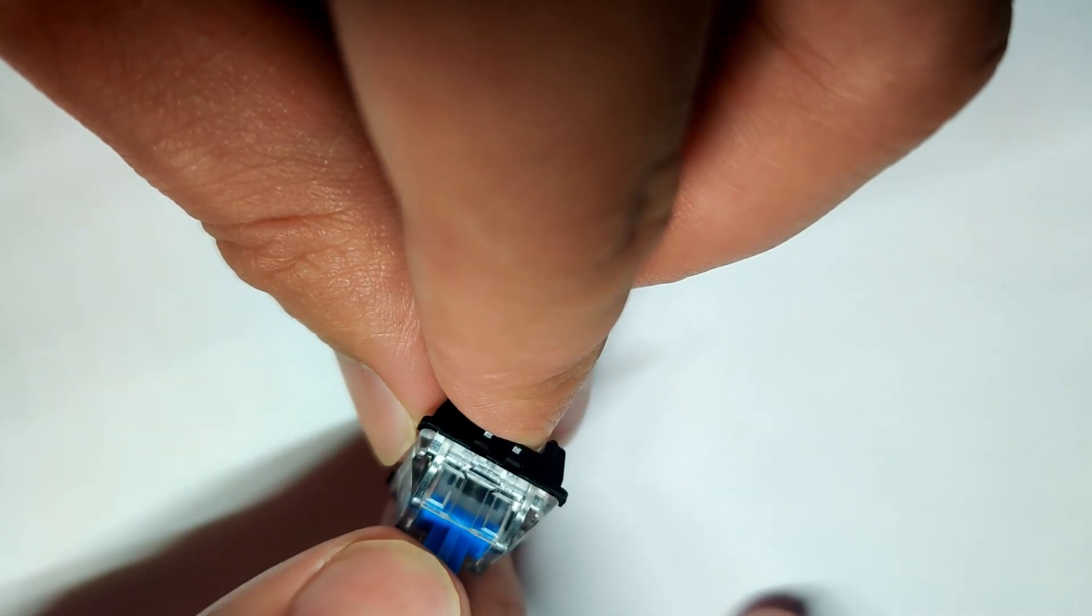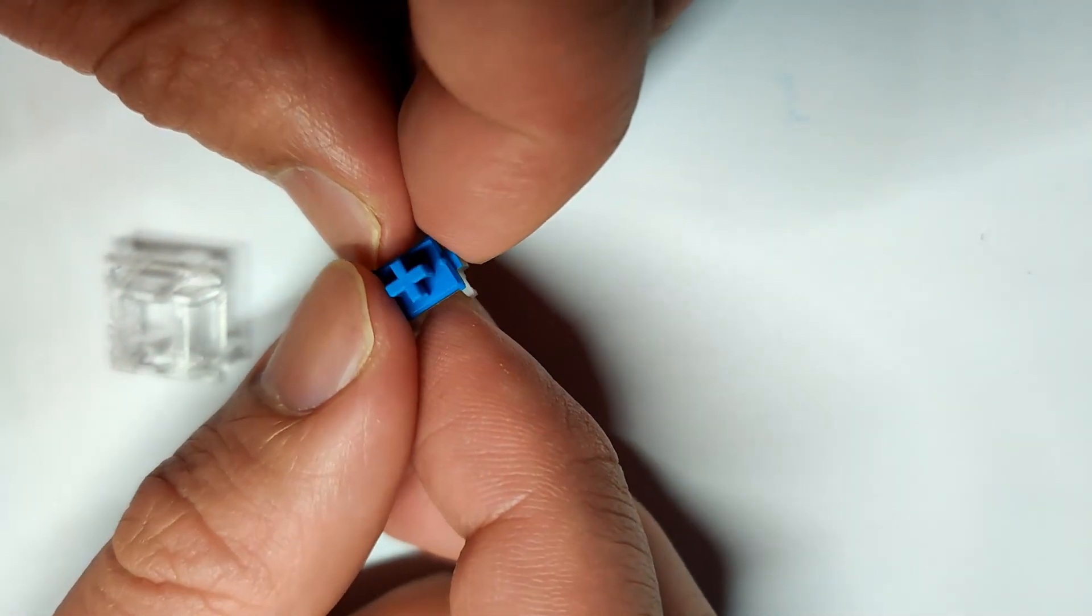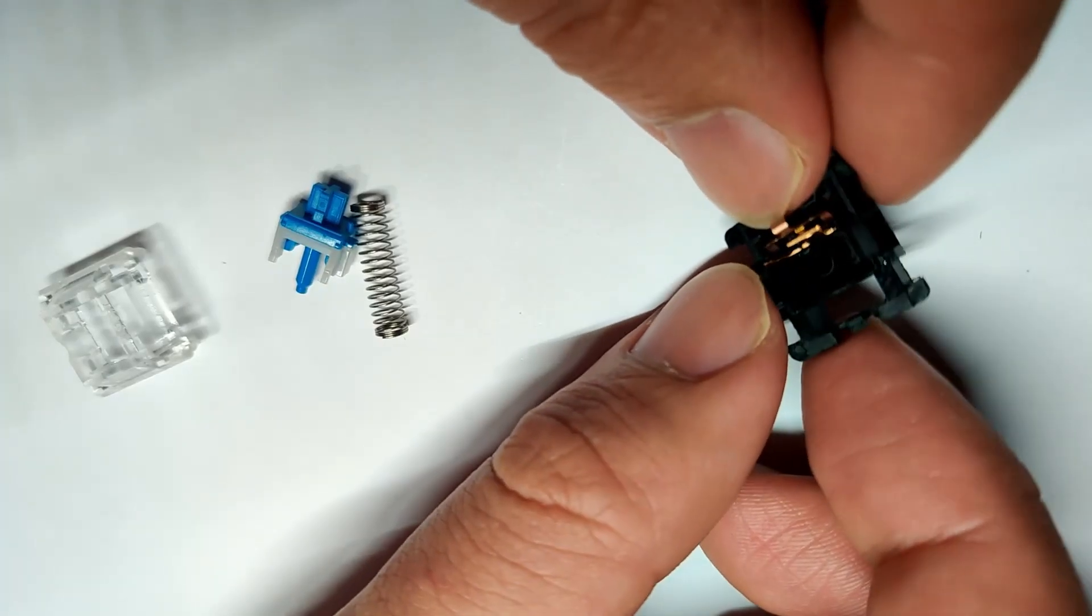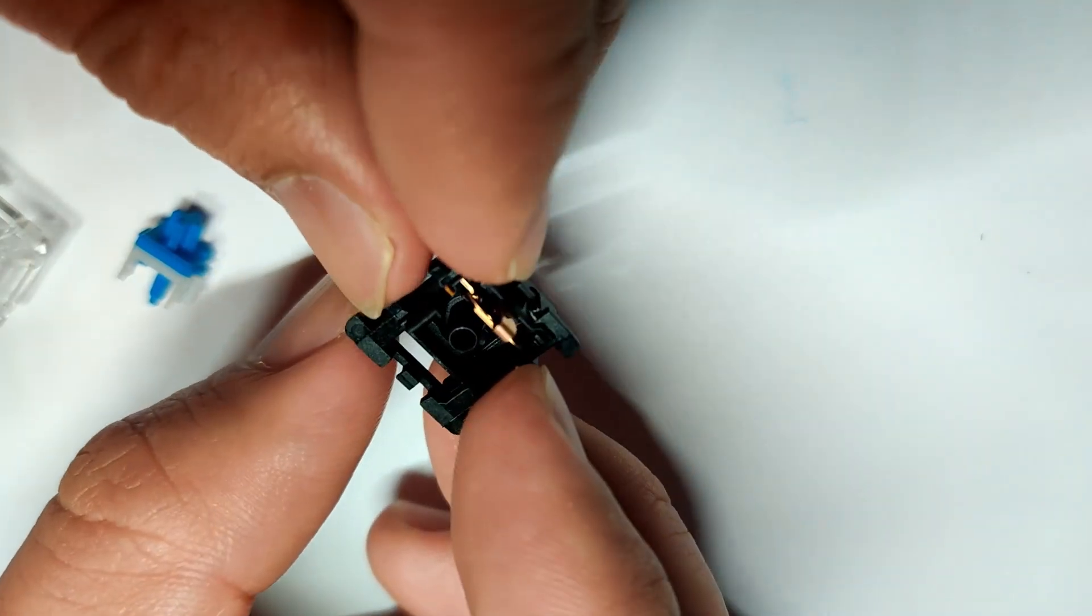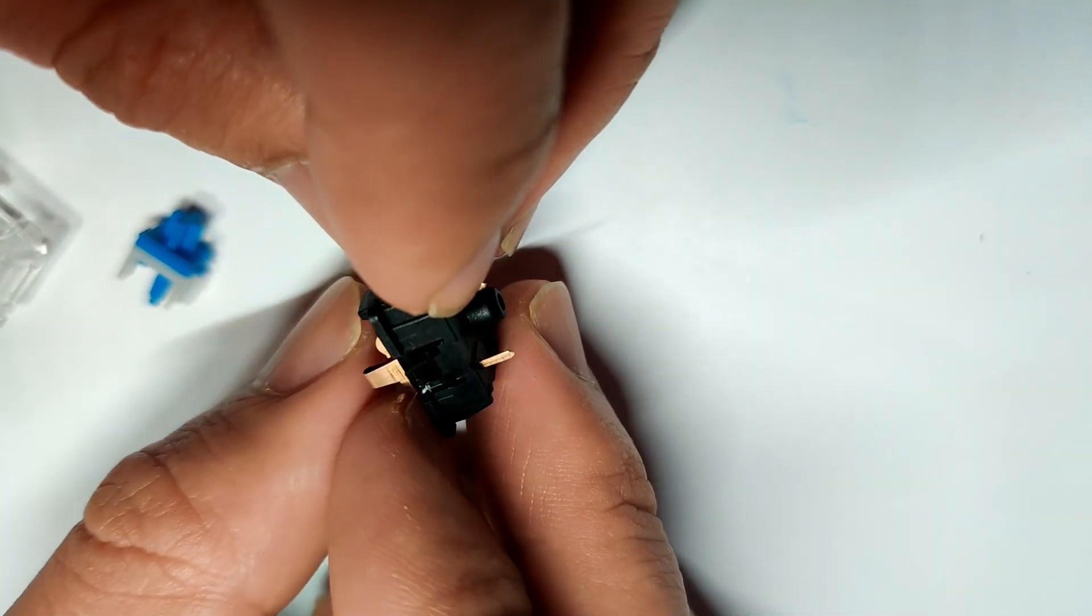So, we gotta disassemble this thing, and here are the parts. We have a clear upper housing, the blue stem with a white collar, a spring, and the bottom housing. This bottom housing actually contains a leaf spring, which closes the connection when the stem is depressed.